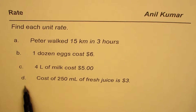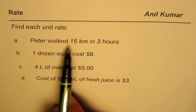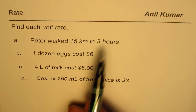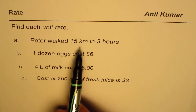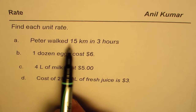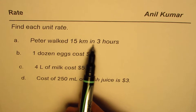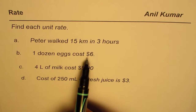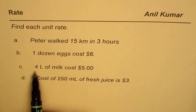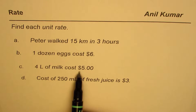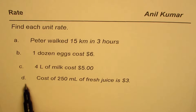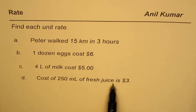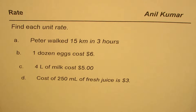The question here is to find each unit rate. Four are given. First, Peter walks 15 kilometers in three hours — unit rate means the rate at which Peter is walking, that is how many kilometers in one hour. Second, one dozen eggs cost six dollars. Third, four liters of milk costs five dollars. The last one is cost of 250 milliliters of fresh juice is three dollars. You can pause the video, write down the unit rate for each, and then check your solution.